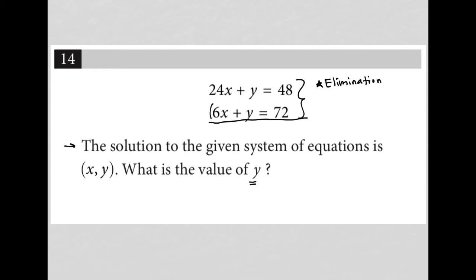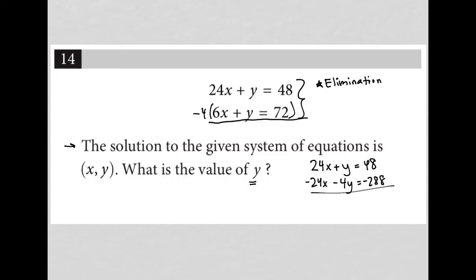The way I'm going to do that is by multiplying the entire second equation by negative 4. In doing so, my top equation stays the same at 24x plus y equals 48. My bottom equation turns into negative 24x minus 4y, and 72 times negative 4 is negative 288. So when I combine these two equations together, my x terms cross out, which is exactly what I was wanting to happen. y minus 4y is negative 3y, and 48 minus 288 is negative 240.